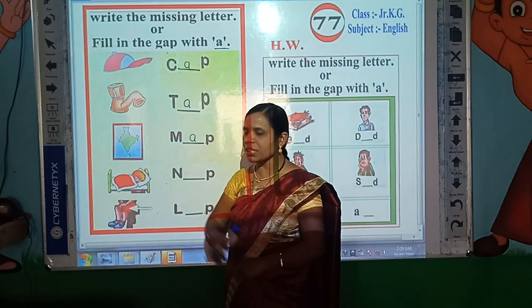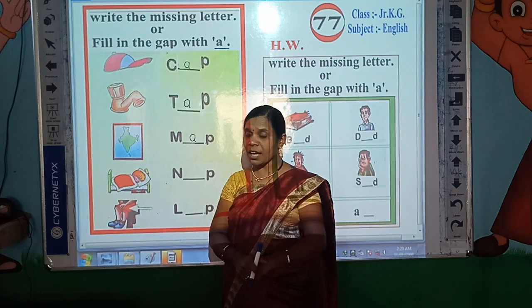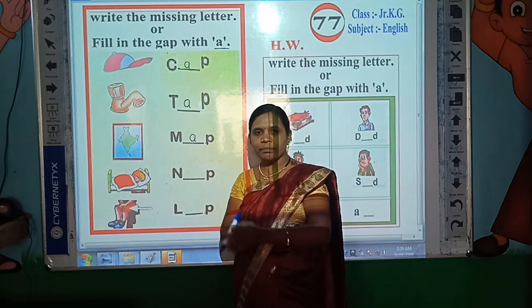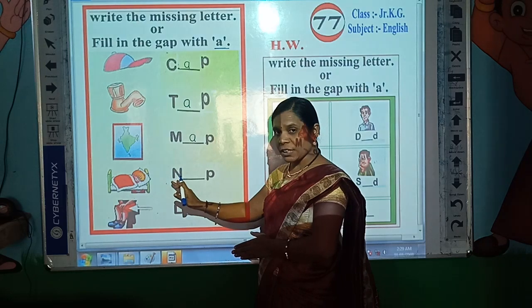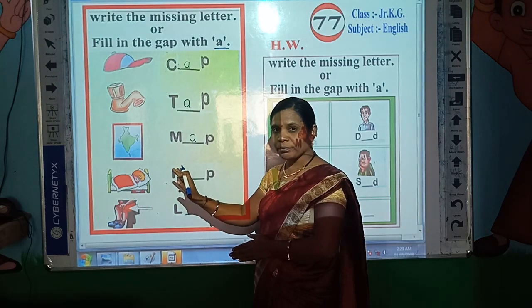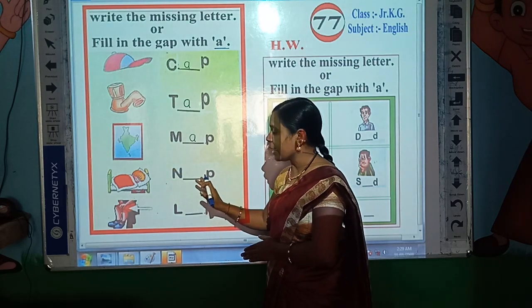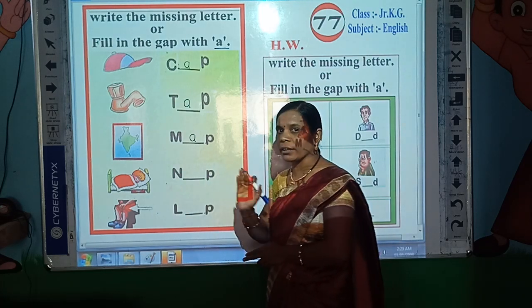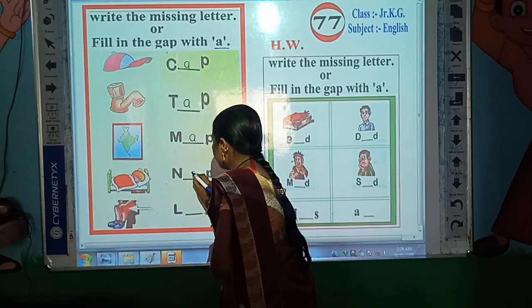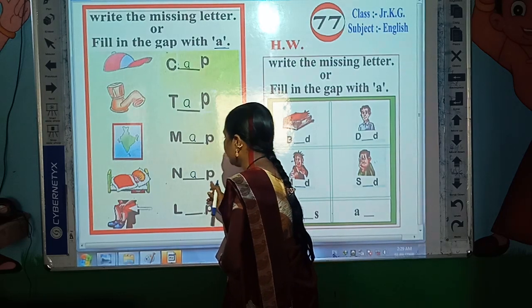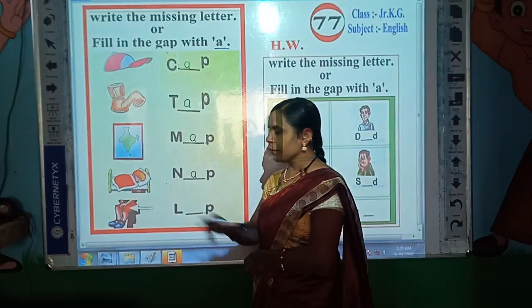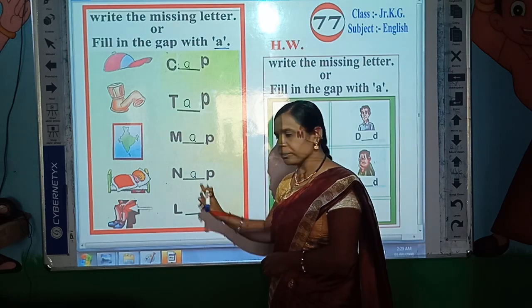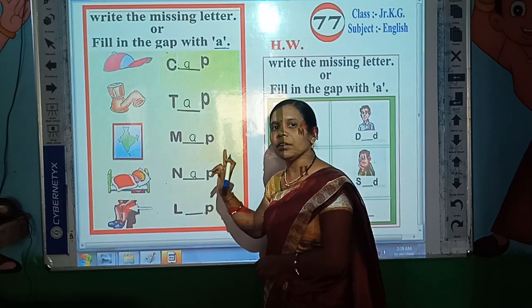Now look here — which picture is this? This is the picture of nap. Now read the spelling of nap: N-A-P, nap. Here A is the missing letter. N-A-P, nap.